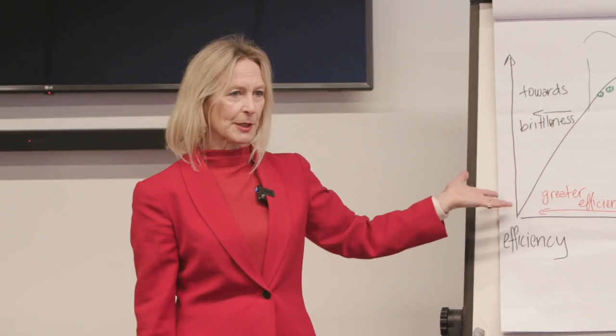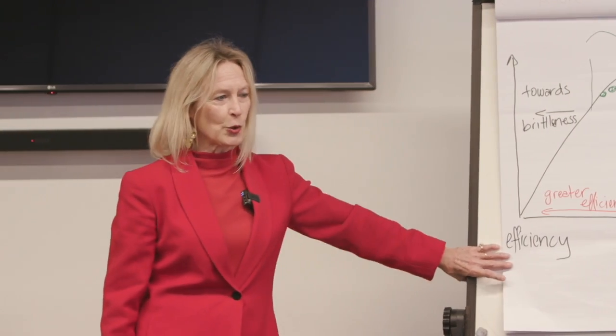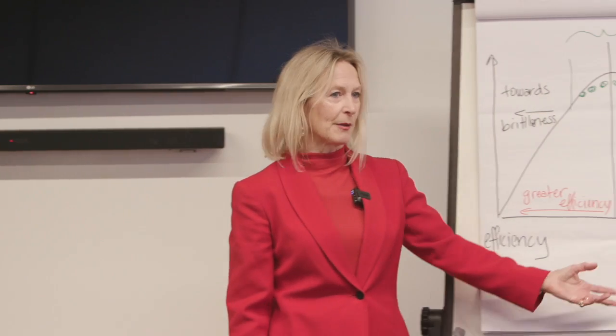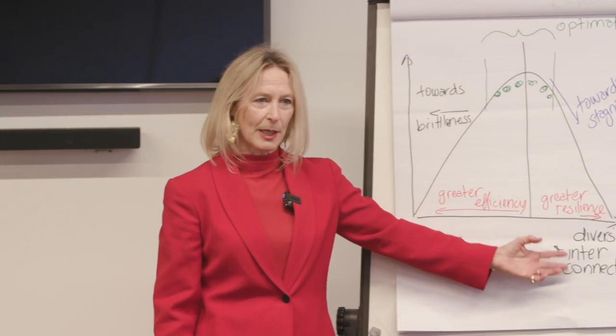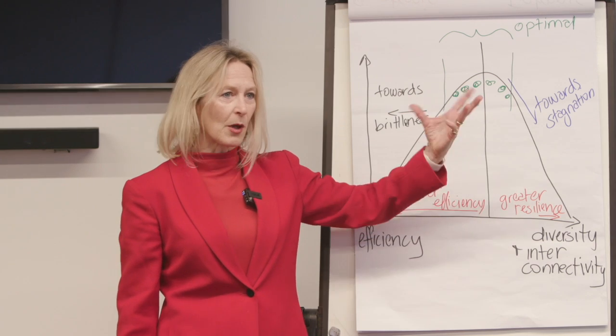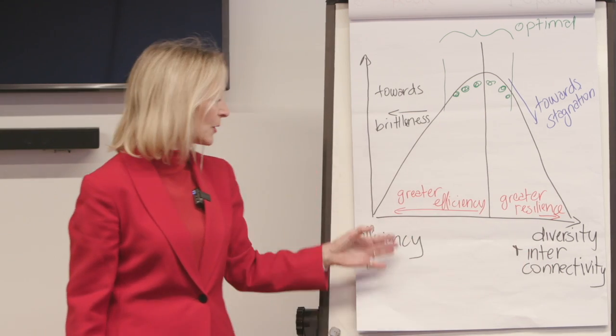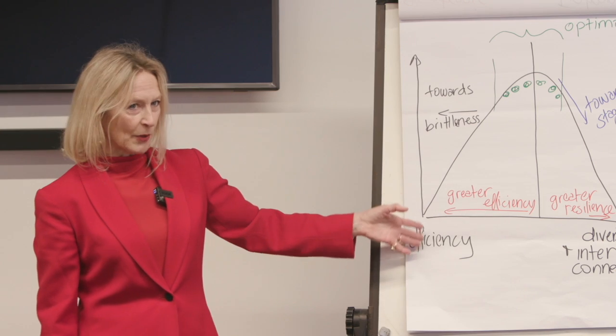It's a really simple model, very self-explanatory. And this applies to all systems — it applies to currency systems, it applies to human relationships. If we have a family running like clockwork and there's no opportunity for sitting down and just doing crazy stuff, we've squeezed out a whole lot of life force energy. If you've got too much diversity and interconnectivity and not enough structure, you have this.